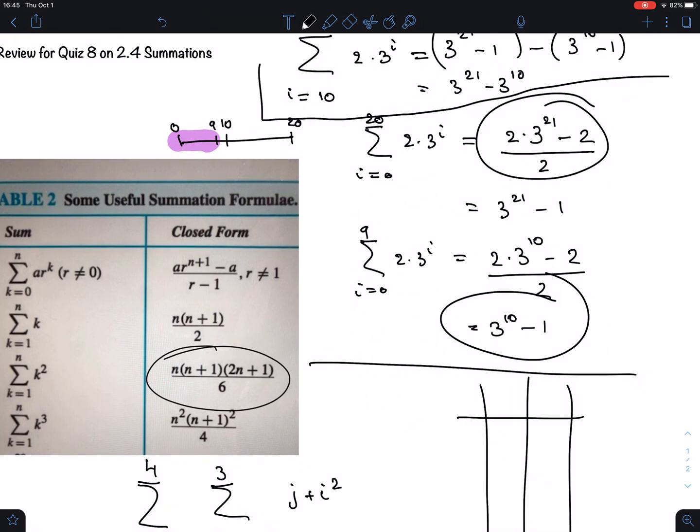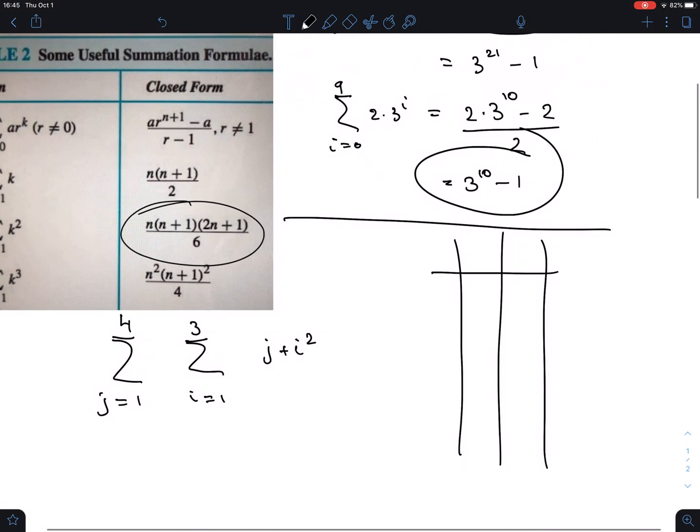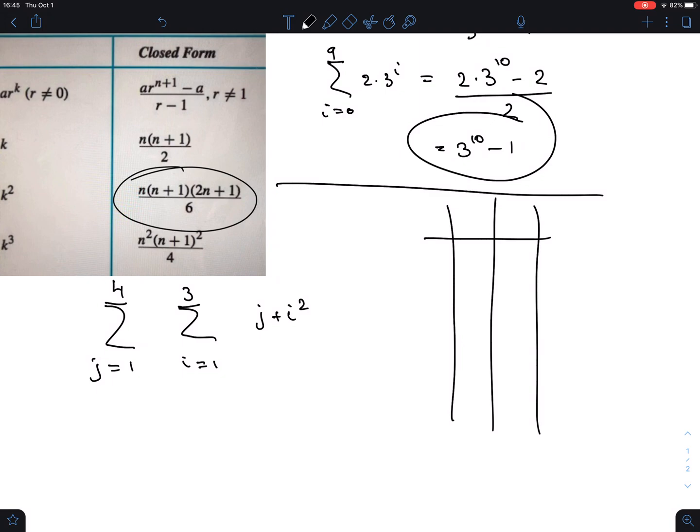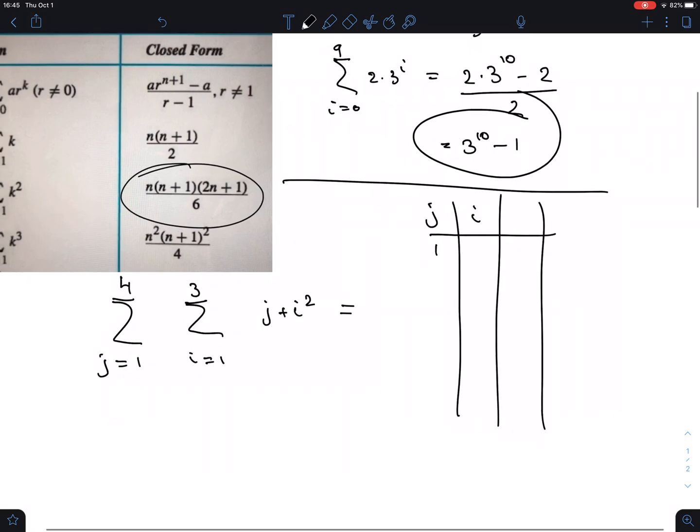If you just put an equal sign and then put a number here, you're not going to get credit for it. I need to see how you figured this out. We have the outside counter j and the inside counter i. j goes from 1 to 4, but we cannot just write 1, 2, 3, 4 for j because when j is 1, i now takes the values 1, 2, and 3. That's the end of the i loop. So now j can increment, and then we get again 1, 2, and 3.